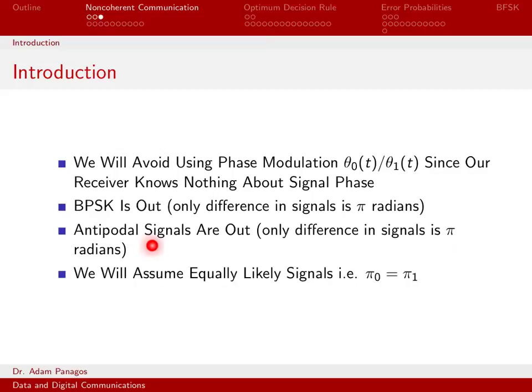Another thing just to mention here, as usual, we're going to assume equally likely signals. So S_0(t) and S_1(t) are the two signals that I can transmit, and we're going to assume that they're equally likely. And the notation we like to use for that is that pi_0 equals pi_1 equals a half. So the odds of me sending signal 0 are a half, and the odds of me sending signal 1 are a half.